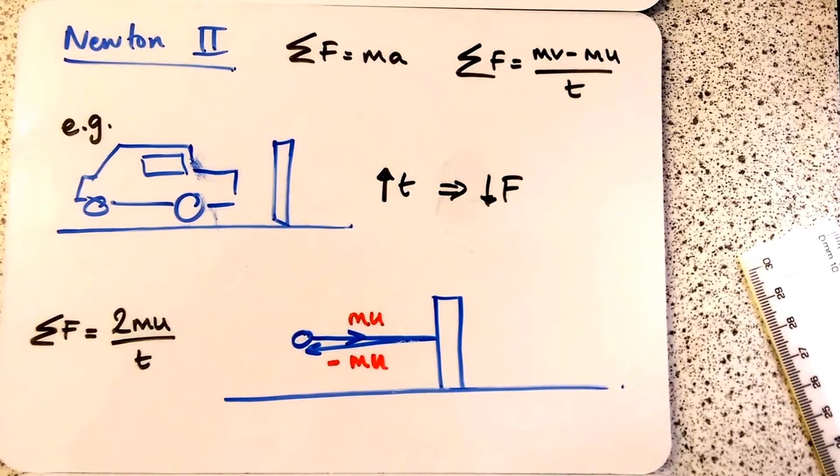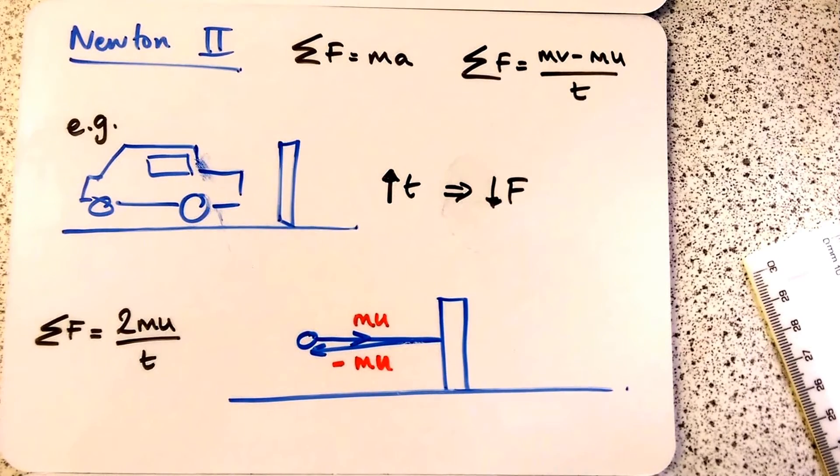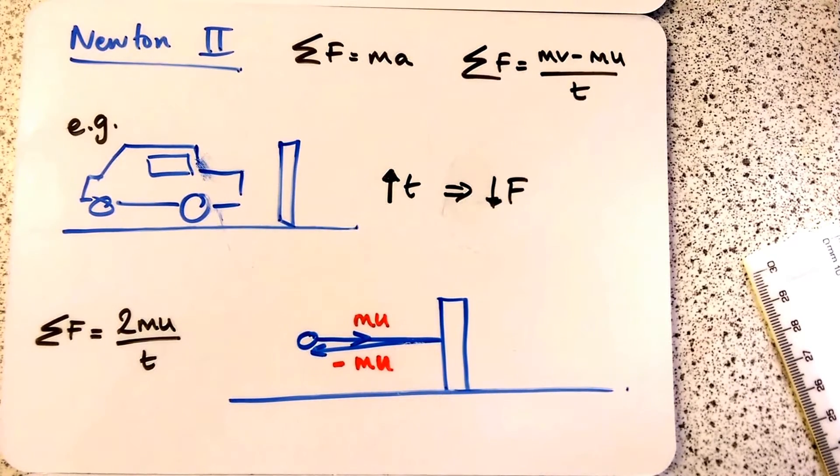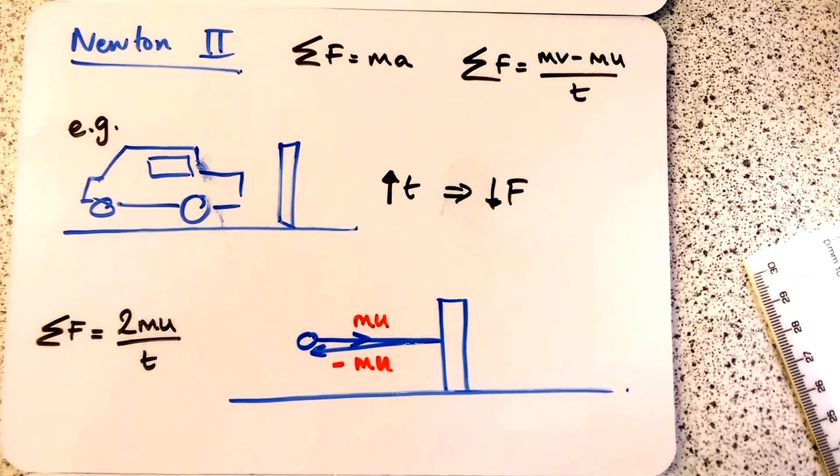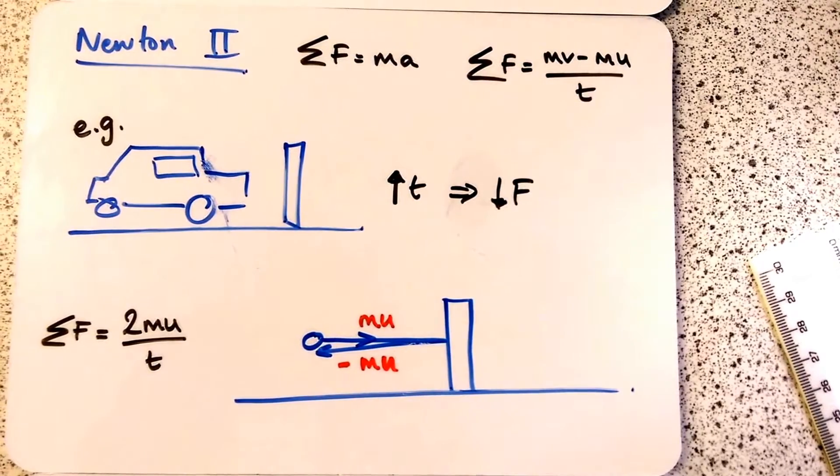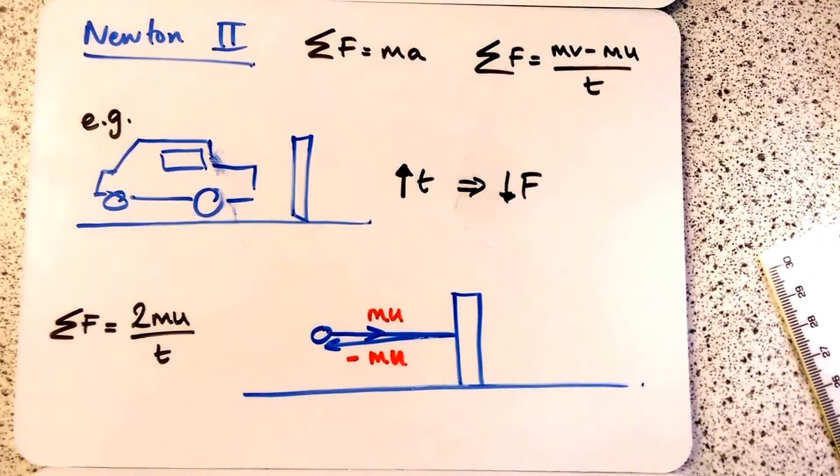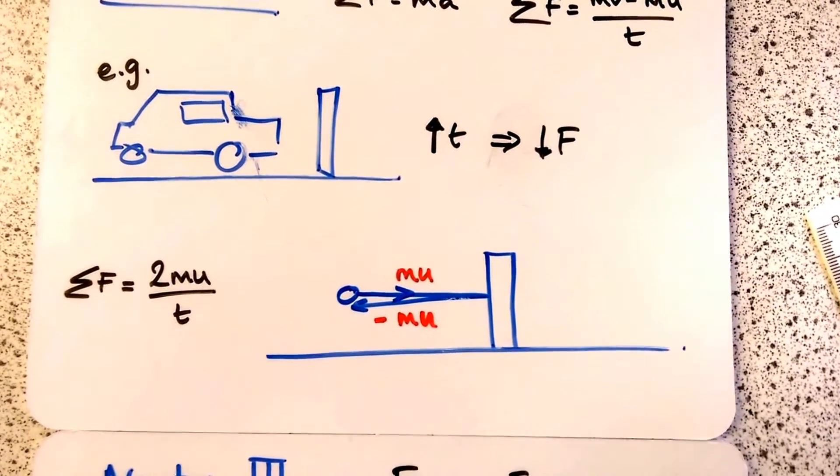One example is crumple zones for cars. The front of the car crumples up, meaning the time over which the collision happens is greater, and therefore the force is smaller. The rate of change of momentum is smaller. This is the same for seatbelts and crash helmets as well.